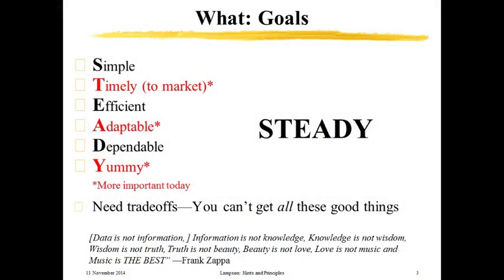The acronym for goals is STEADY: simple, timely, efficient, adaptable, dependable, and yummy. Compared with 30 years ago, I think three of these six goals are new — things you didn't worry about much when building a computer system back then. Engineering is a matter of making choices and making well-judged trade-offs.